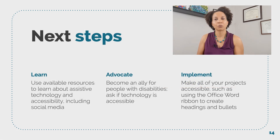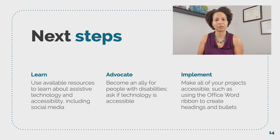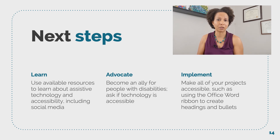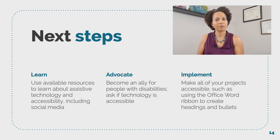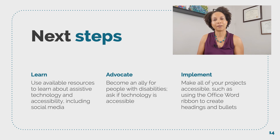So where do you go from here? First is to keep learning. Use all available resources from trusted sources to learn about assistive technology and accessibility, including being mindful to follow people with disabilities and disability organizations on social media. Then become an advocate and an ally — constantly ask if the technology you're using or building has considered accessibility. Lastly, make it a habit to implement what you learn in everything you do. This could mean using WCAG in a large technical project, or even just being mindful when creating a Microsoft Word document. For those, you should use the ribbon to create headings and bullets, rather than only styling the text to look like those elements, because again, the markup is the user experience. More on making accessible digital documents is also in the resources, and remember that every decision is important.